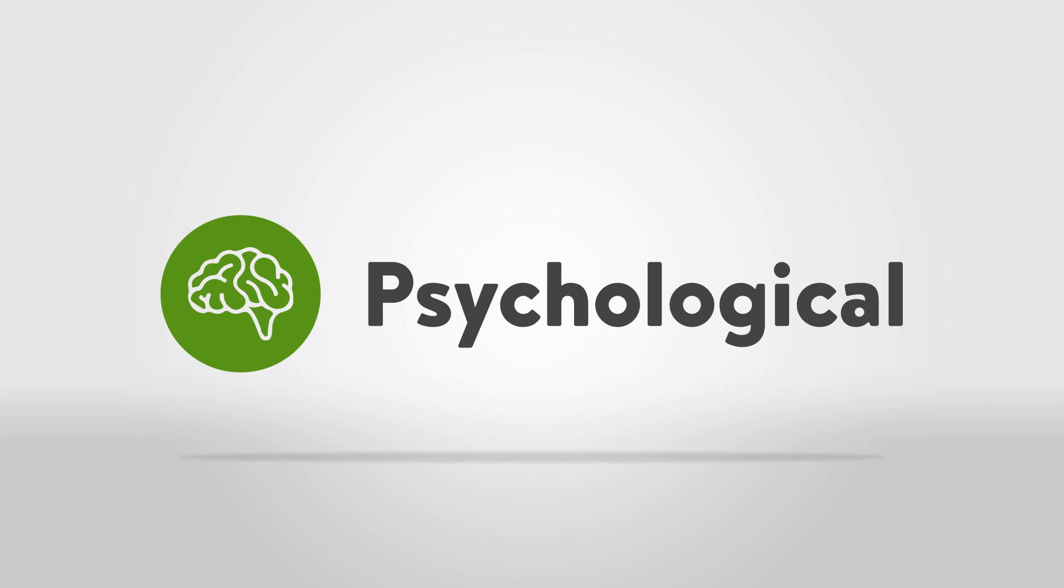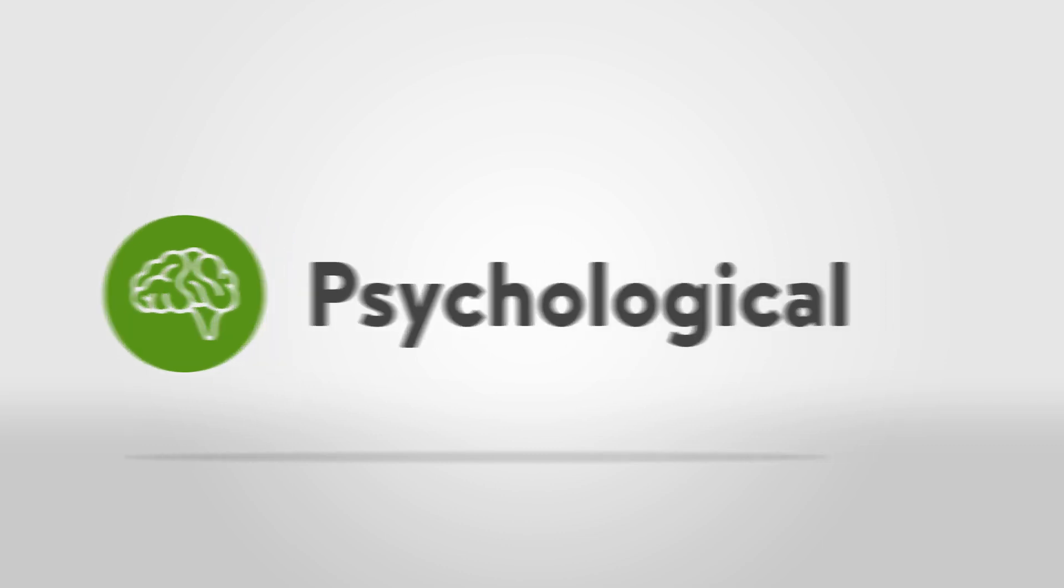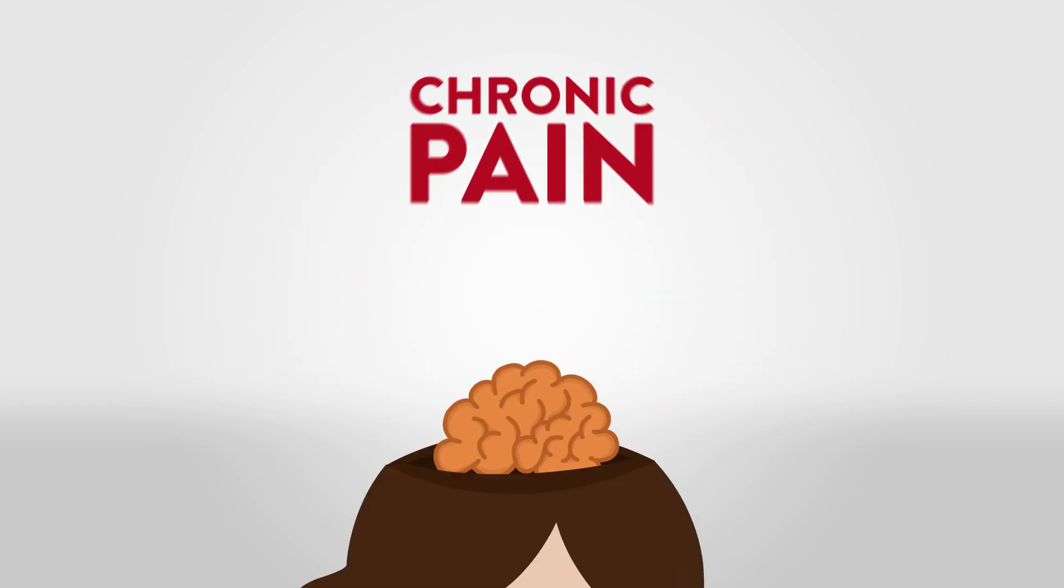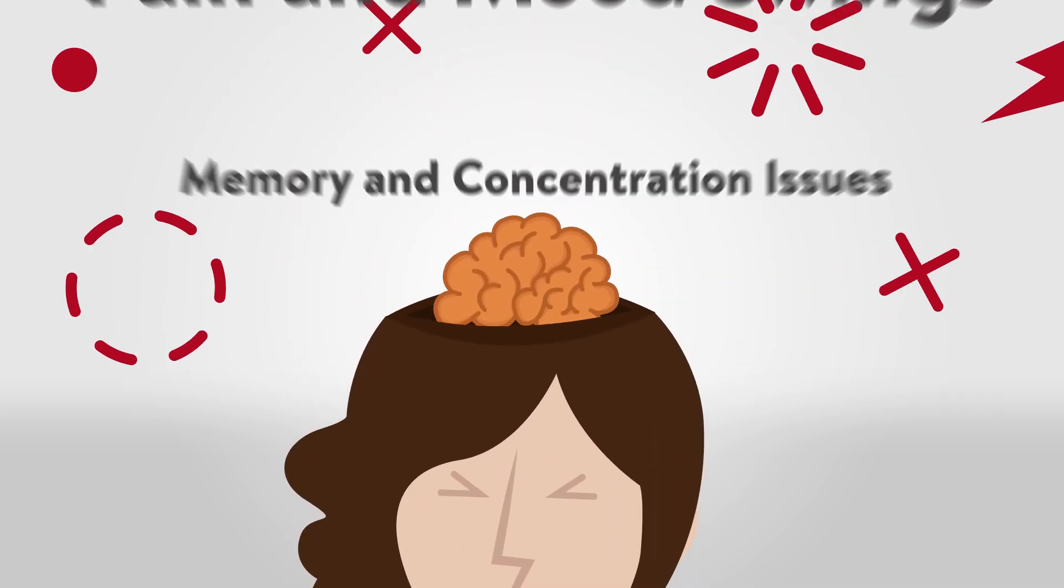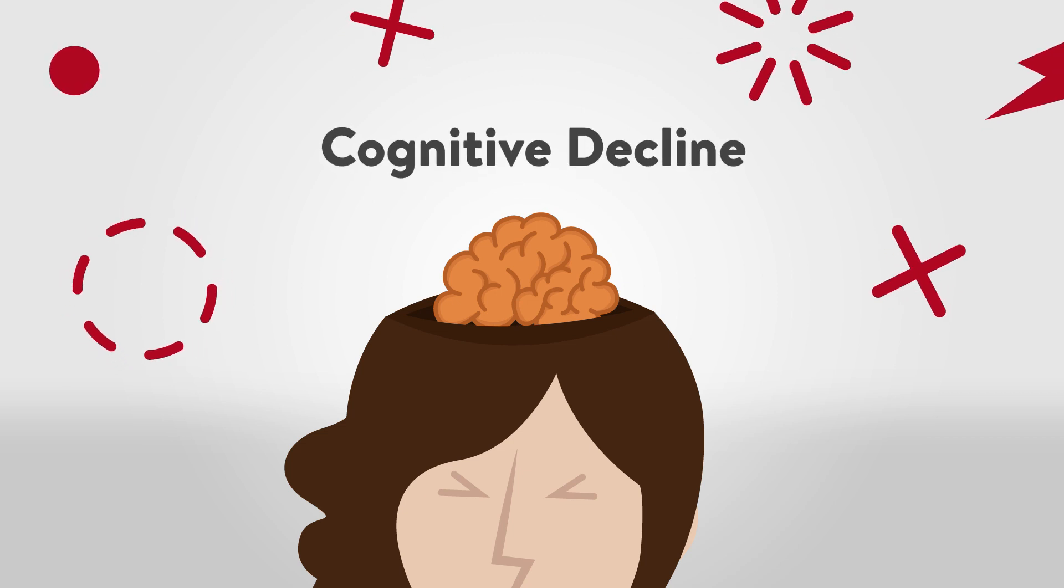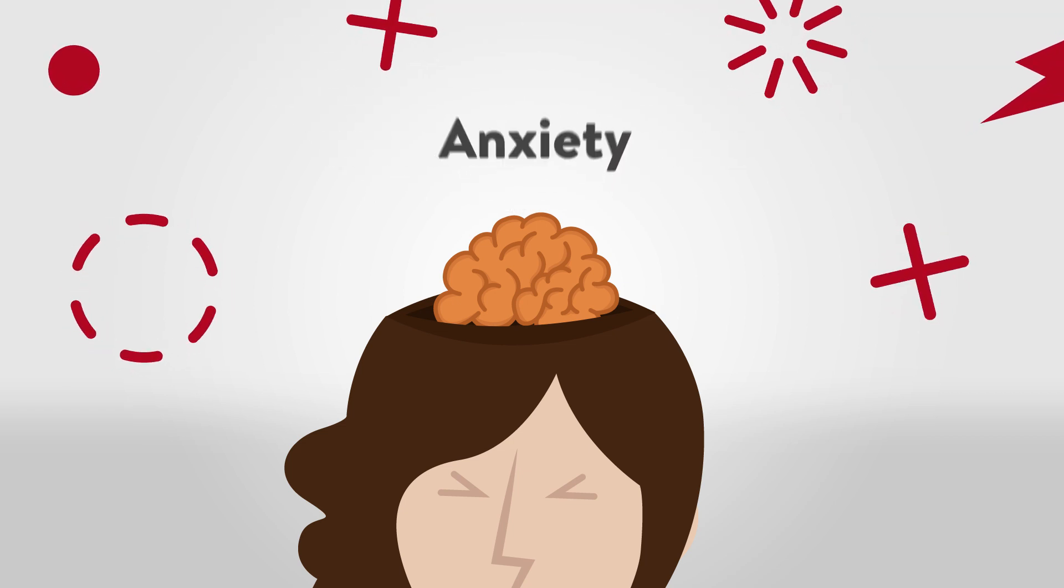The third and final point of the healing matrix is the psychological aspect of pain. Chronic pain can rewire the brain, leading to more pain and mood swings, memory and concentration issues, cognitive decline, anxiety, and depression.